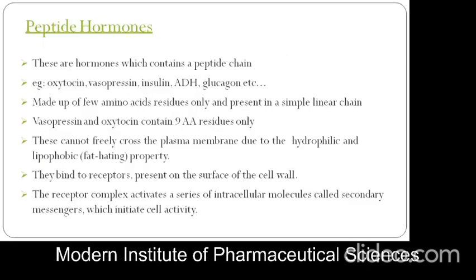Next are peptide hormones. These are hormones which contain a peptide chain — mainly long chains of amino acids. Examples include oxytocin, vasopressin, insulin, ADH, and glucagon. Vasopressin and oxytocin contain only 9 amino acid residues and are present in a simple linear chain. Peptide hormones cannot freely cross the plasma membrane due to their hydrophilic and lipophilic properties. They bind to receptors on the surface of the cell, and the receptor complex activates intracellular molecules called secondary messengers, which initiate cell activity.